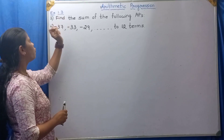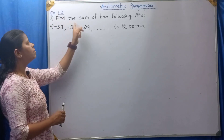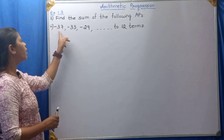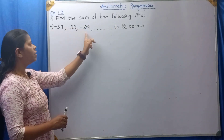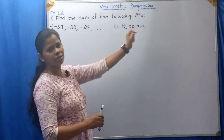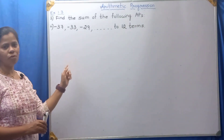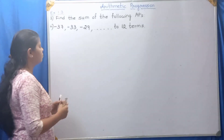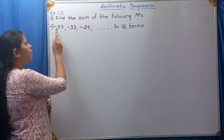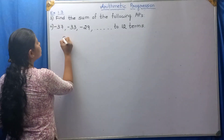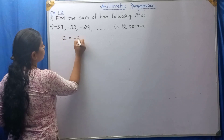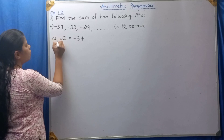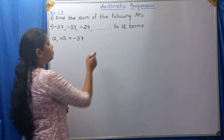Exercise 1.3, first part — find the sum of the following APs, second question: minus 37, minus 33, minus 29, up to 12 terms. Here, A is equal to minus 37 — A is nothing but A1. Now D: D is equal to A2 minus A1.